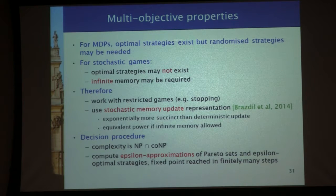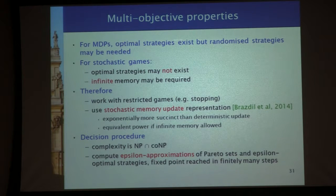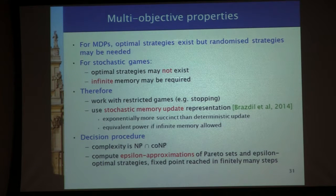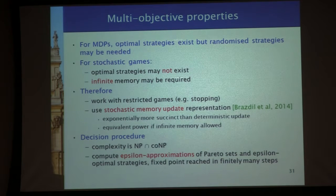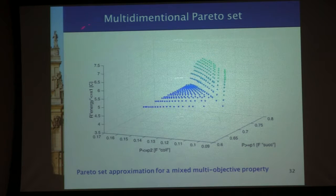Even for two objectives and conjunctions of two objectives, optimal strategies may not exist without infinite memory. Because of this, we work with something called the stochastic memory complex, which is an exponential but finite representation equivalent in power to infinite memory strategies. We can generalise the computation of value iteration and actually compute these Pareto sets working in the n-dimensional space. The tool also gives you visualisation and projections of three-dimensional property sets down to two dimensions.